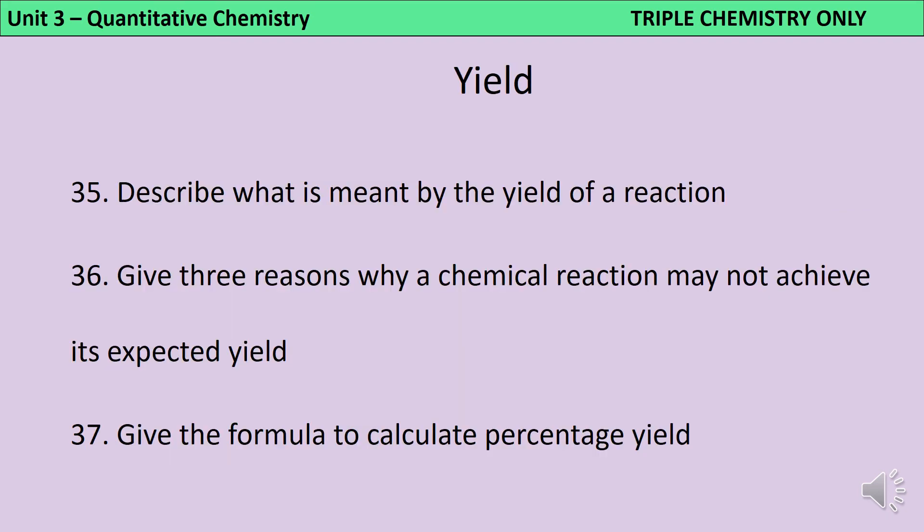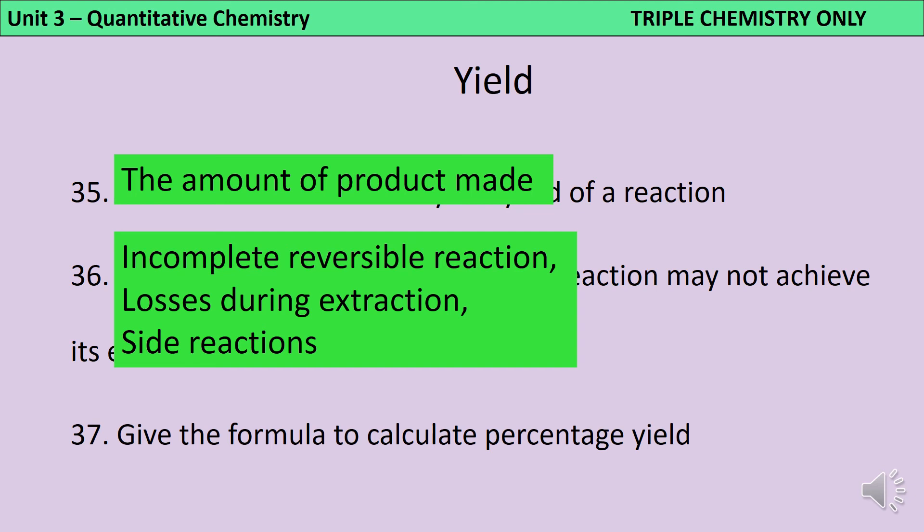The yield of a reaction is the amount of the product that is being made. And there are three reasons that a chemical reaction may not achieve its expected or maximum theoretical yield. It may be an incomplete reaction, particularly if it's a reversible reaction and the equilibrium is not all the way over to the right-hand side. It's possible that the correct amount of yield was produced, but some is lost during extraction because it's been left on the walls of the container. And finally, some of the reactants may have taken part in what we call side reactions. So, for instance, they may have reacted with oxygen in the atmosphere.